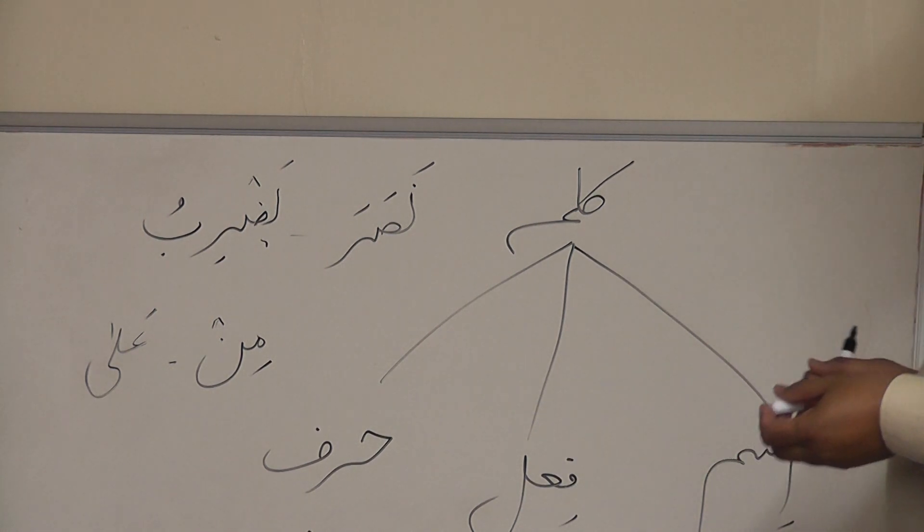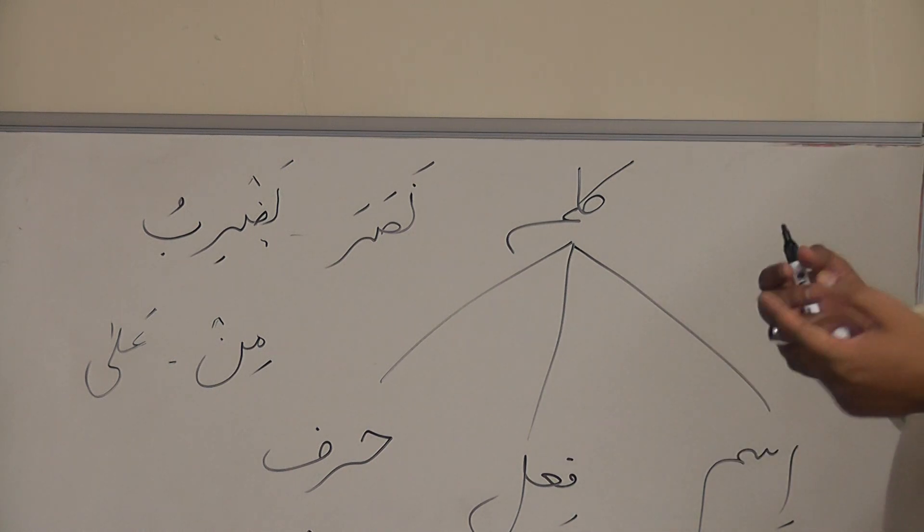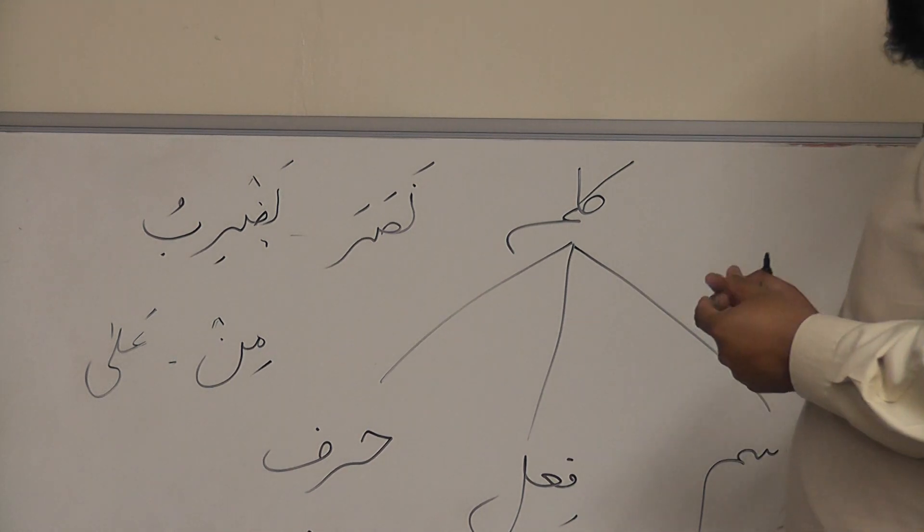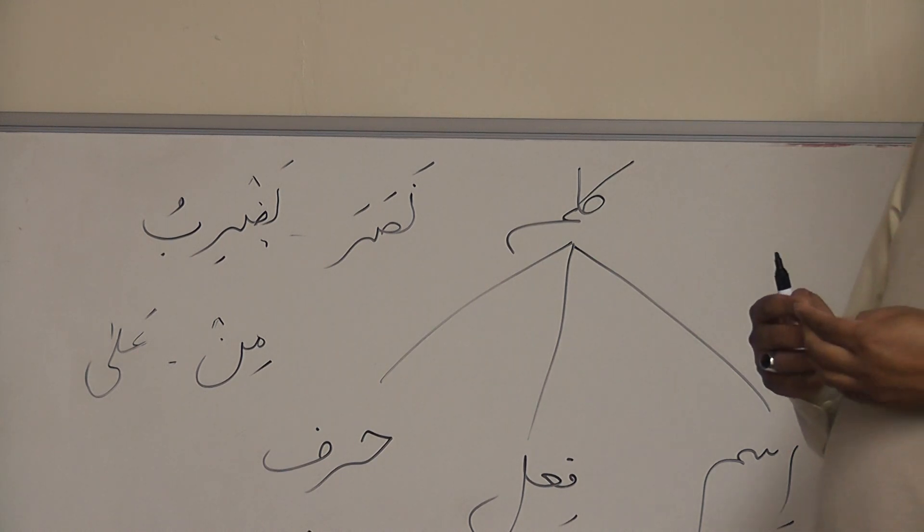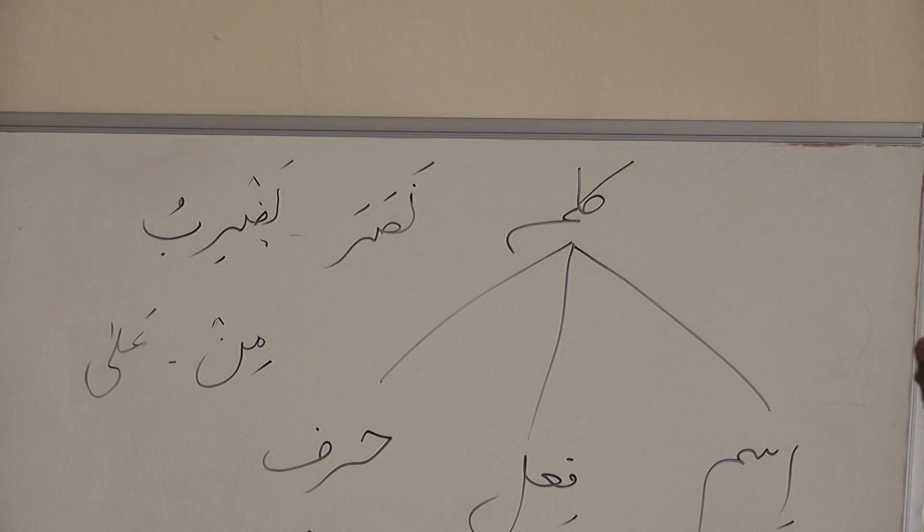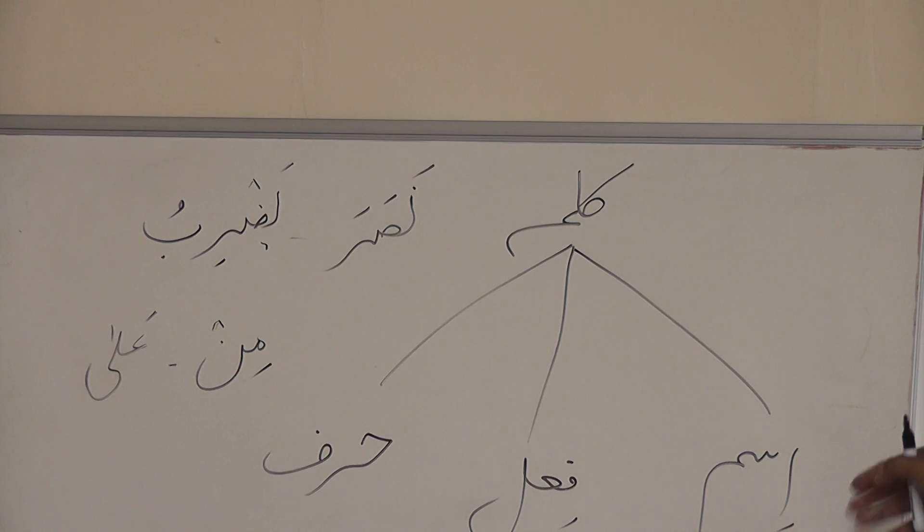So today in this lesson we learnt lafs, then two types of lafs—maudu and muhumal, meaningful word, meaningless word. Again we learnt that the meaningful word is called kalima, and there are three types of kalima: ISM, FAIL, HARF—noun, verb, and particle. Inshallah in the next lesson we will learn about the different types of ISM.